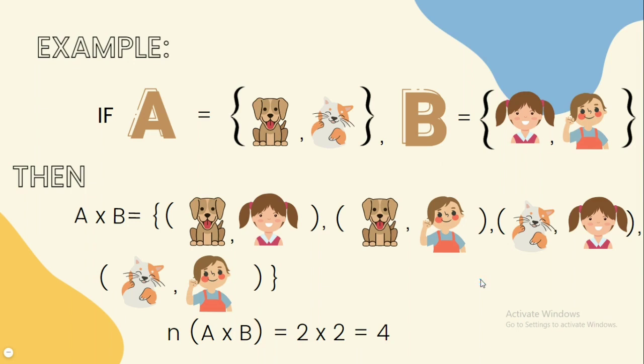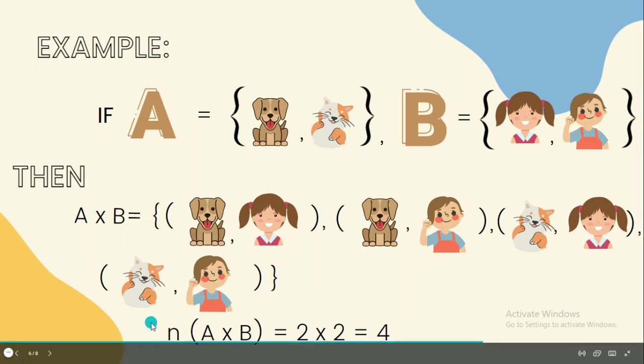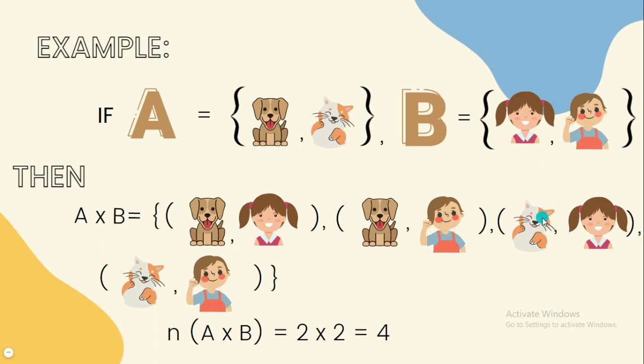Just like the steps in the earlier examples, for the first ordered pair, we have dog and girl. Next, dog and boy. And third, we have cat and girl. And lastly, we have cat and boy. So 2 times 2 equals 4. That is why we have 4 ordered pairs.